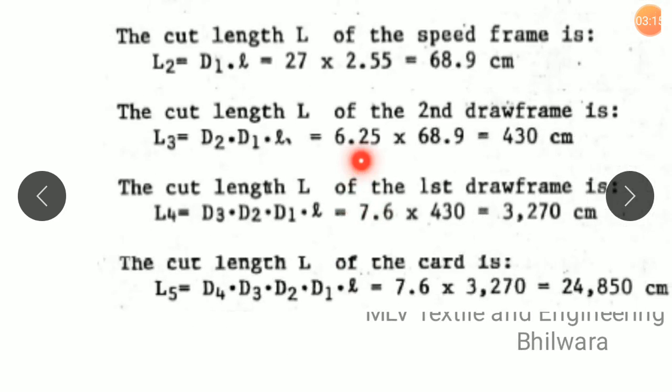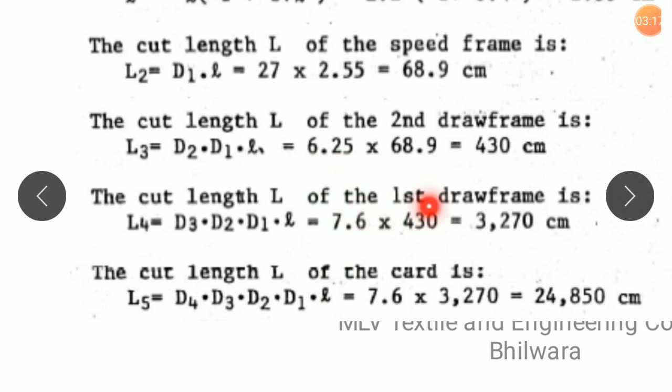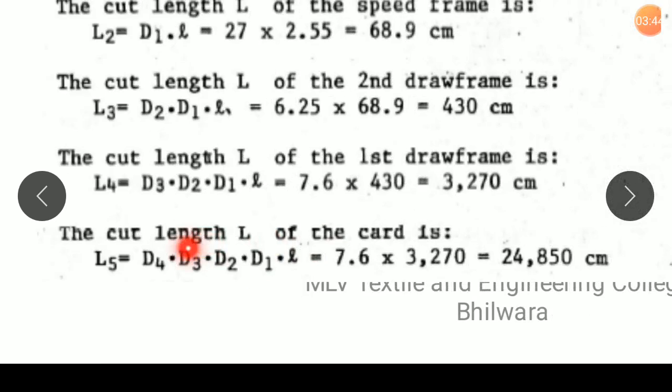Similarly, the cut length corresponding to first draw frame L₄ equals D₃ × D₂ × D₁ × L. Putting the value of all drafts and L = 2.55 cm, it works out accordingly. So in this way, similarly we can calculate the cut length corresponding to card.